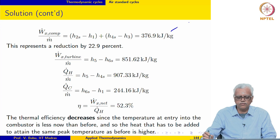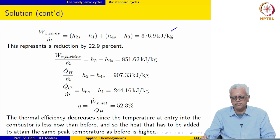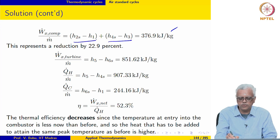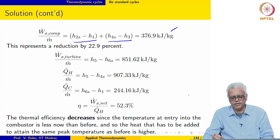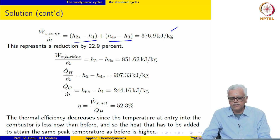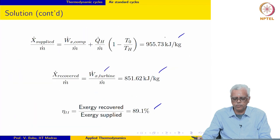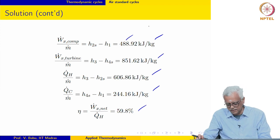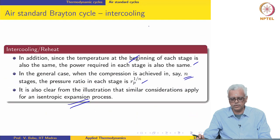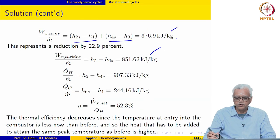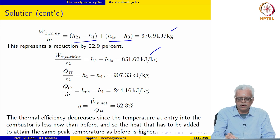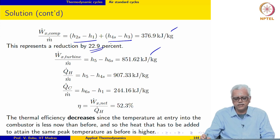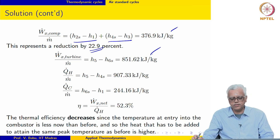The specific power required for the compression process comes out to be 376.9. Notice this equals the sum of both stages since the power required in each stage is the same. Comparing with the previous result of 488.92, there is a substantial reduction in compressor power as expected. Power produced in the turbine remains the same, so compressor power has decreased by 22.9 percent while turbine power is unchanged.